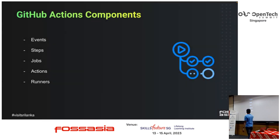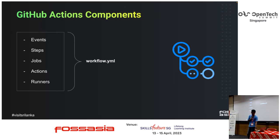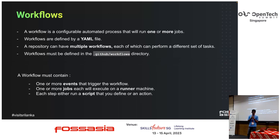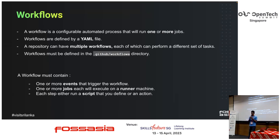There are five components in GitHub Actions: events, steps, jobs, actions, and runners. We call it all together a workflow file, which needs to be written in YAML. A workflow is a configurable automated process that will run one or more jobs in your repository. A single repository can have multiple workflows — you can have a workflow to run CI, another for lint testing, and any number of workflows to perform different tasks. It needs to be defined in the directory called .github/workflows, otherwise it won't work. A workflow should contain one or more events that can trigger it, and one or more jobs to execute; either you can have a script or use actions templates.